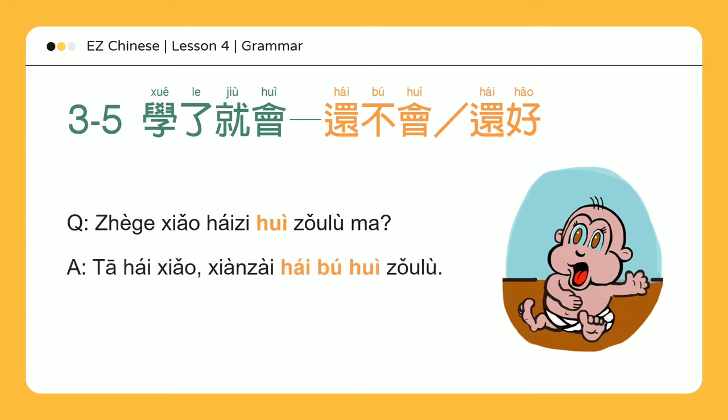他还小，现在还不会走路 — He's still too young and doesn't know how to walk yet.